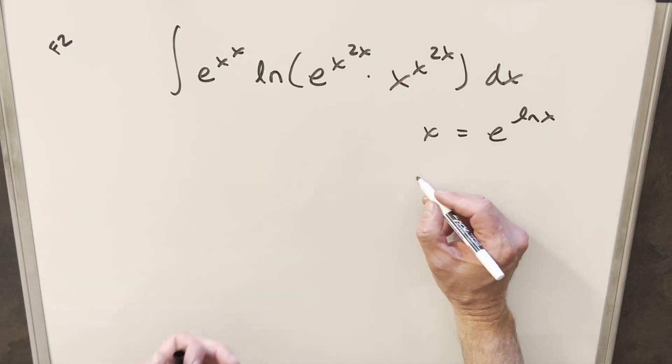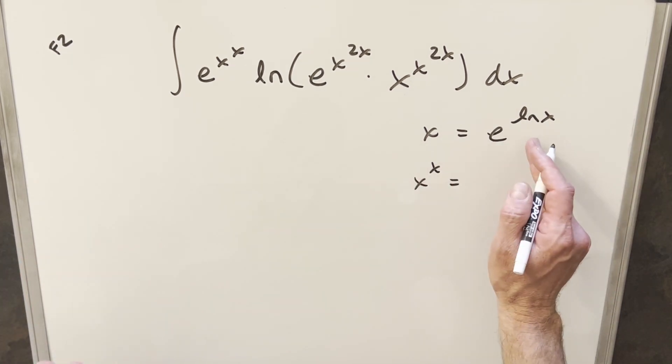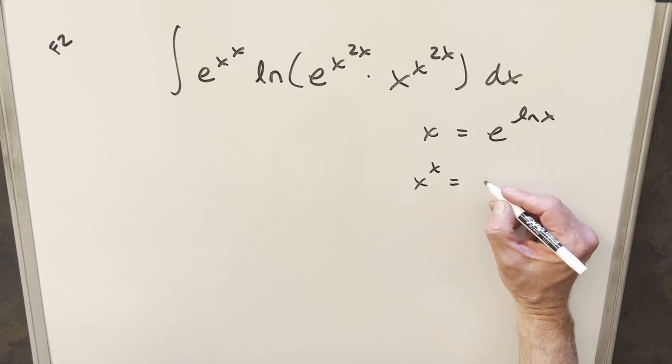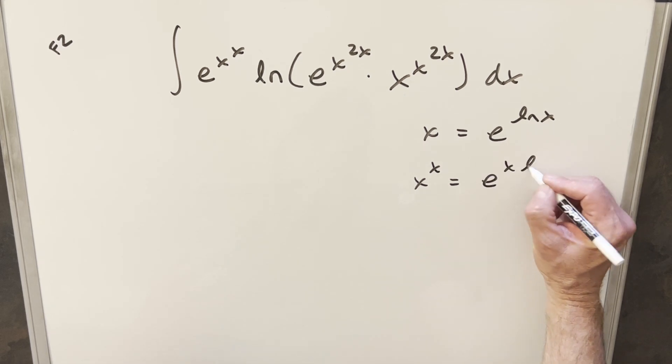And so when you have something like x to the x, just raising both sides on this to the x and multiplying it in, you can write this as e to the x ln x.